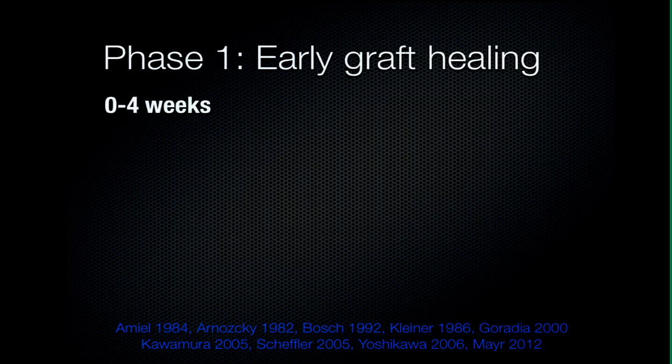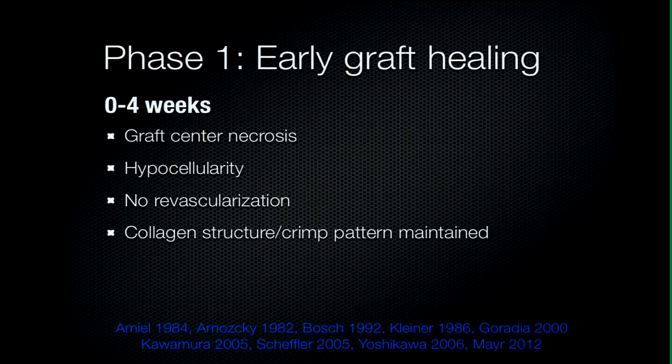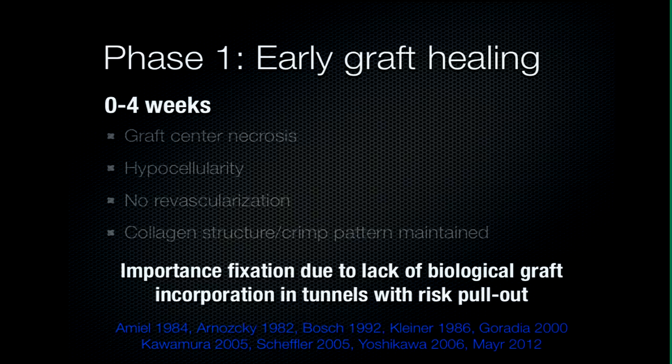The first phase, the early graft healing phase, takes place in the first four weeks after reconstruction. There is necrosis at the graft center, very little cellular activity, and no signs of revascularization. The collagen structure and crimp pattern of the graft is not changed. This has an implication: if a graft fails at early stages after reconstruction, it is not because the graft itself ruptures, but because of failure of the biological graft cooperation in the tunnels — with risk of failure and pull-outs. That is why fixation strength of your components is important in the primary phase of rehabilitation.